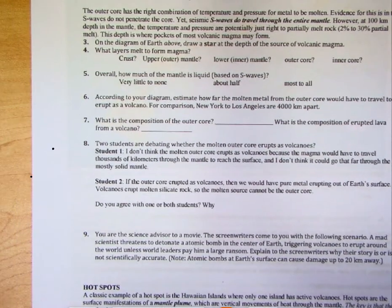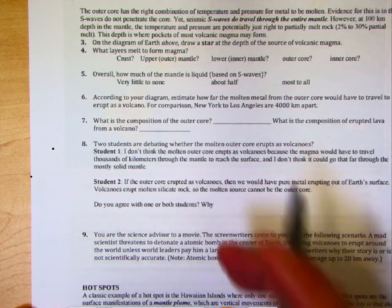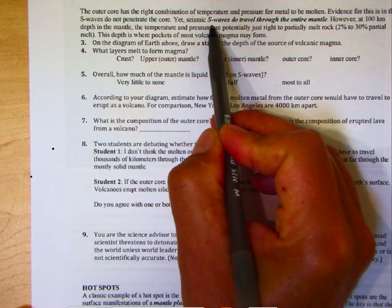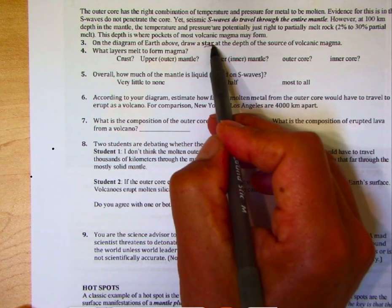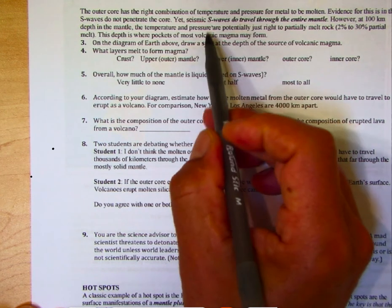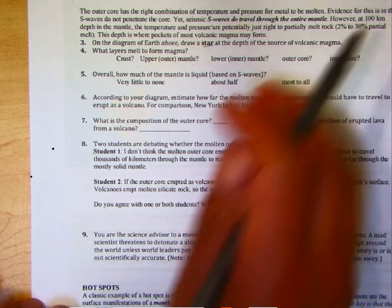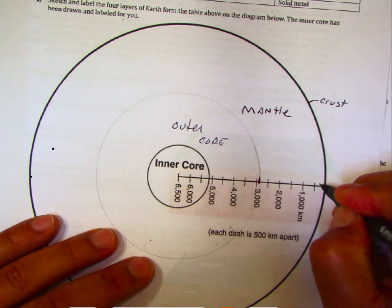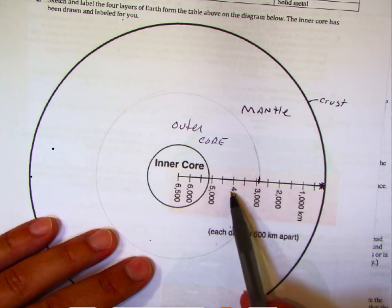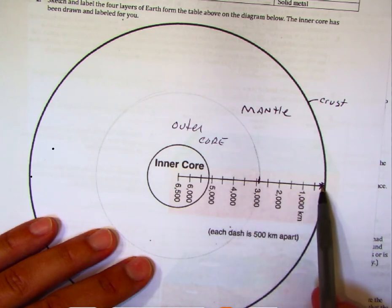On the next page, there are questions about the origin of magma. One important point is that S-waves do not travel through the core, which means the outer core is liquid. On the diagram, draw a star at the depth where magma from volcanoes originates — that's usually about 100 kilometers depth. So we draw a star right there in the uppermost mantle. That's pretty shallow, meaning magmas are not coming from the core.